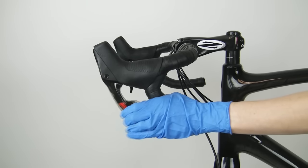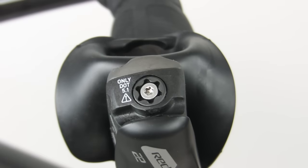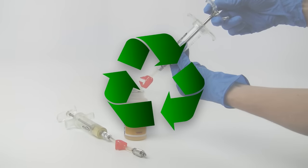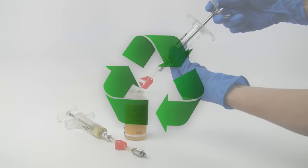Pull on the lever very firmly several times. Inspect the lever and caliper for any leaks. Dispose of DOT fluid in accordance with local and federal regulations. This concludes the bleed procedure for the SRAM road hydraulic disc brakes. Thanks for watching.